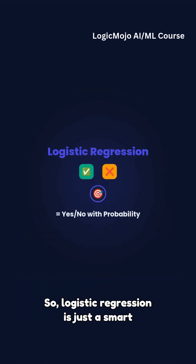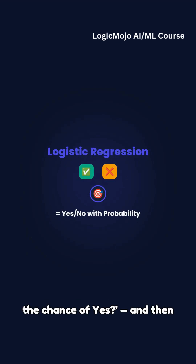So, logistic regression is just a smart way for a machine to say: what's the chance of yes? And then make a decision.